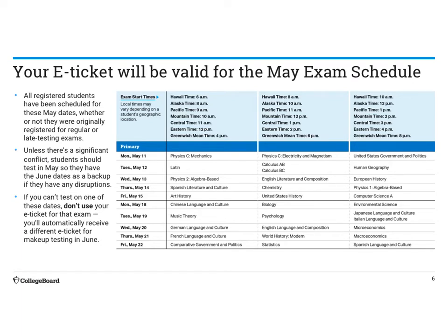Here are the times for the exam. The Physics C exam is going to be on Monday, May 11th at 11 a.m. The Physics 1 exam is going to be on Thursday, May 14th, and it's going to begin at 3 p.m. Those are the two times that we're concerned with.